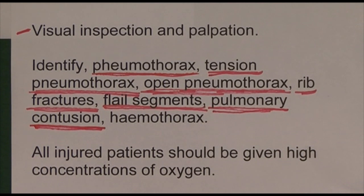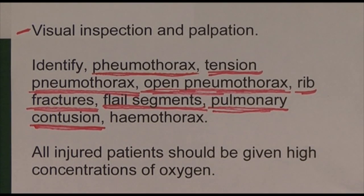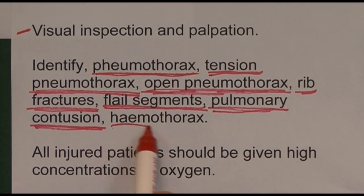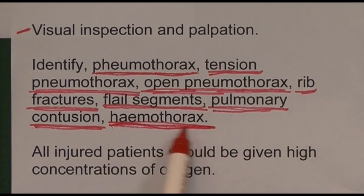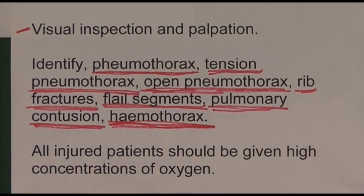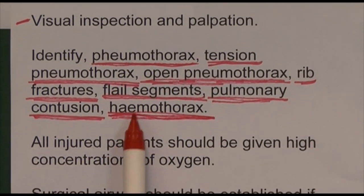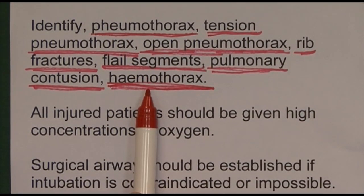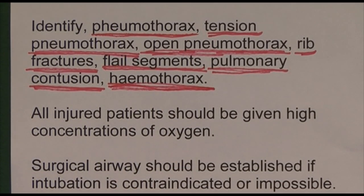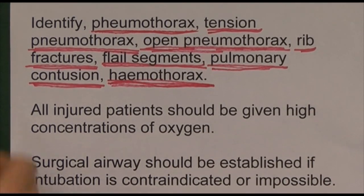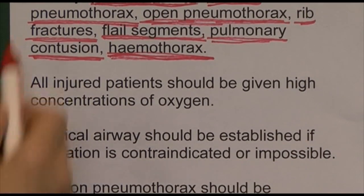Haemothorax — blood entering the pleural cavity — is also a possibility, and of course you can get a haemothorax alongside a pneumothorax: a haemopneumothorax. The two can go together, so those are the sorts of injuries we're looking for.